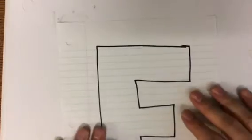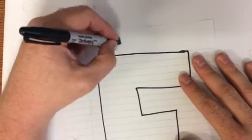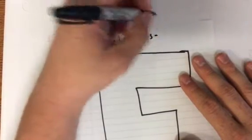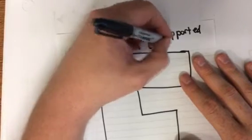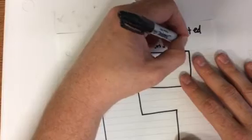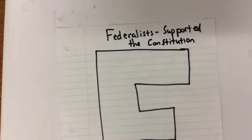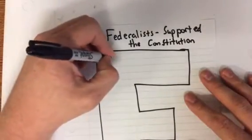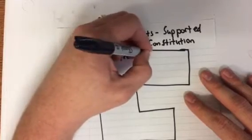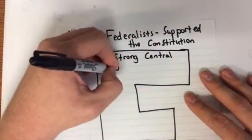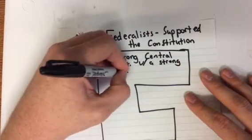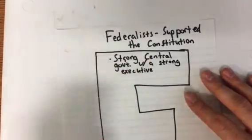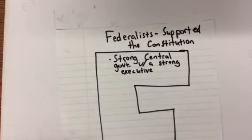We're going to start with our Federalists. At the top of this page, write down 'Federalist' — they supported the Constitution. These were our supporters of the Constitution. The difference between the Articles of Confederation and our Constitution is that it strengthened the executive branch. So they liked it because it had a strong central government with a strong executive.